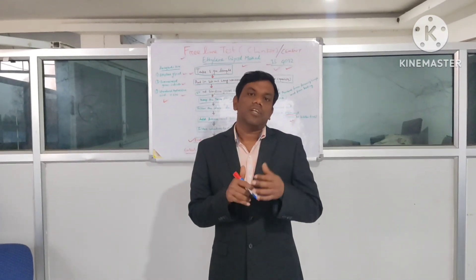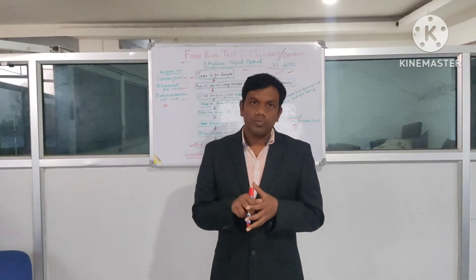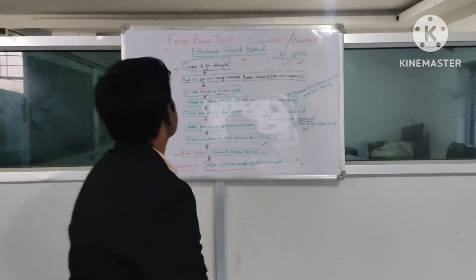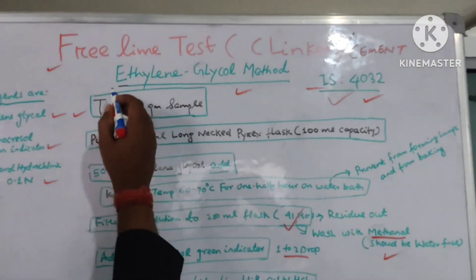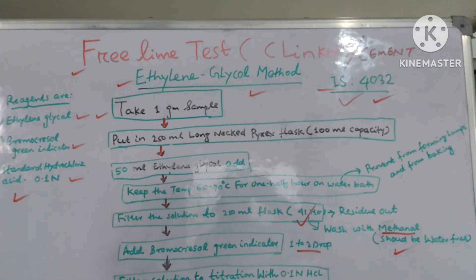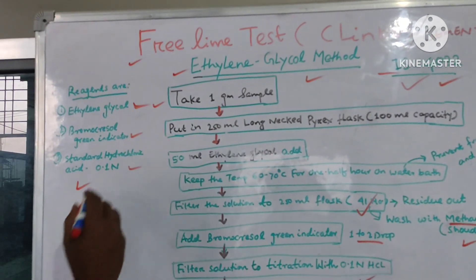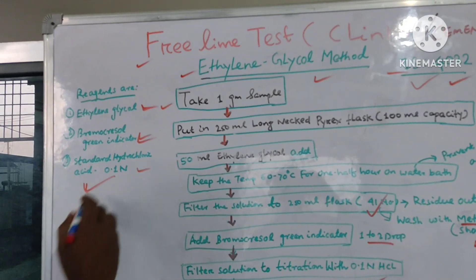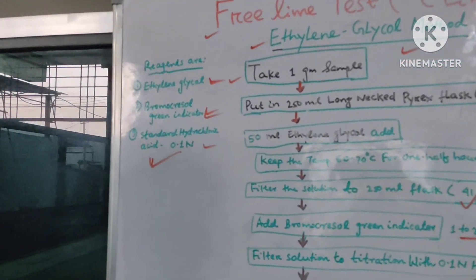This test is standard as per IS 4032. Free Lime test — ethylene glycol method. The reagents used are: ethylene glycol, bromocresol green indicator, and standard HCl 0.1 normality.